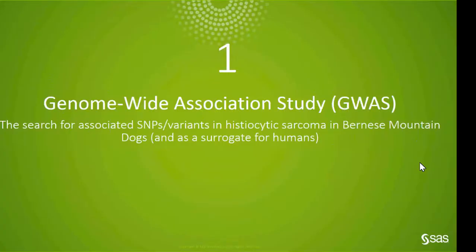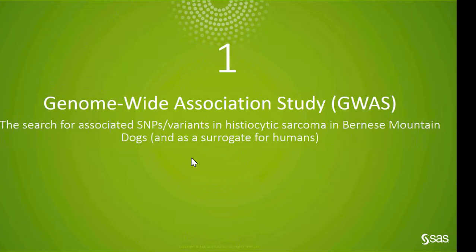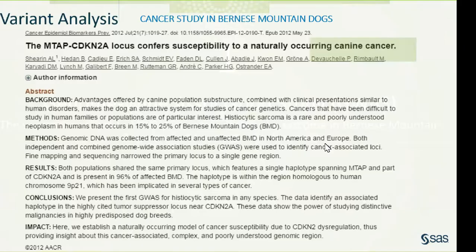Let's begin with the genome-wide association study. This is genetic data - we have SNPs, single nucleotide polymorphisms. For something like this dog example or for humans, you get one copy from each parent, so you know if you're homozygous for one allele, homozygous for the other allele, or heterozygous. We're looking at an association between all these SNPs and whether or not the dog - in this case Bernese Mountain Dogs - has a particular type of cancer.